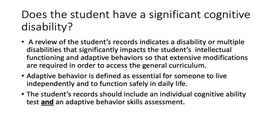The first question we must answer is: does the student have a significant cognitive disability? A review of the student's records indicates a disability or multiple disabilities that significantly impacts the student's intellectual functioning and adaptive behaviors, so that extensive modifications are required in order to access the general curriculum.